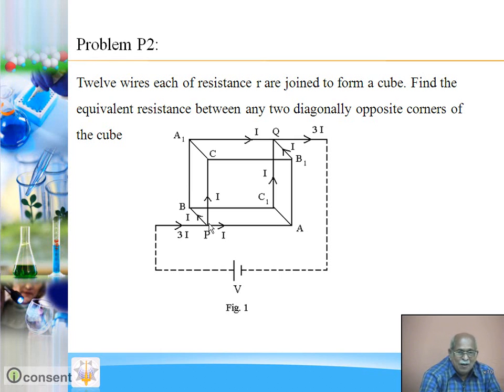So because of symmetry, we can expect that current going to B, C or A are equal. Let us imagine that current in PA, PB and PC is I. Obviously, total current coming to point P must be 3I.